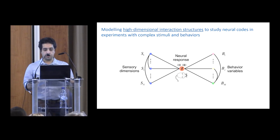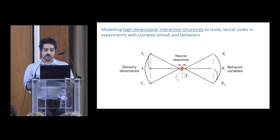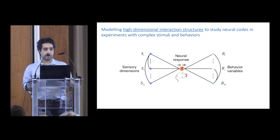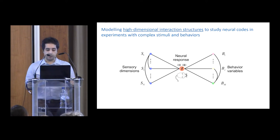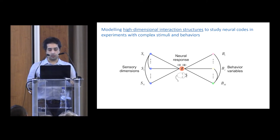A major question in neuroscience is to understand what components of the sensory and behavior variables are represented in the neural activity. With increasing complexity of experiments, more complex sensory inputs are used and larger sets of behavior variables are being recorded and studied in neural representations. This increasing dimensionality of neural variates increases the complexity of the neural encoding problem, and this is the main issue I'm going to talk about today.